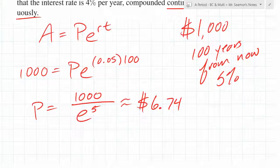If you use your calculator, that comes out to approximately $6.74. So if you put $6.74 in the bank right now earning 5% continuously compounded, you'd have $1,000 at the end of 100 years. So $1,000 a hundred years from now is only worth $6.74 right now. What happens if I said I wanted it in a thousand years? That number is going to go way down because you have longer to grow into the $1,000.